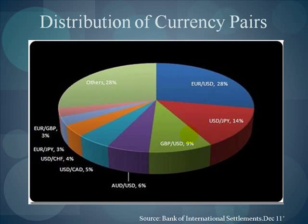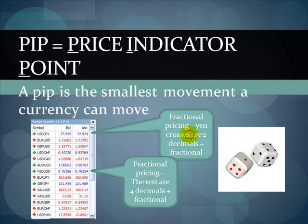Here's a slide showing the distribution of currency pairs. The vast majority of trades are made in the EUR/USD — 28 percent of all trades. The USD/JPY is 14 percent, the GBP/JPY is 9 percent, and the rest take up three to six percent each. Others would include things like the South African rand or the Chinese yuan — currencies not typically traded over-the-counter.